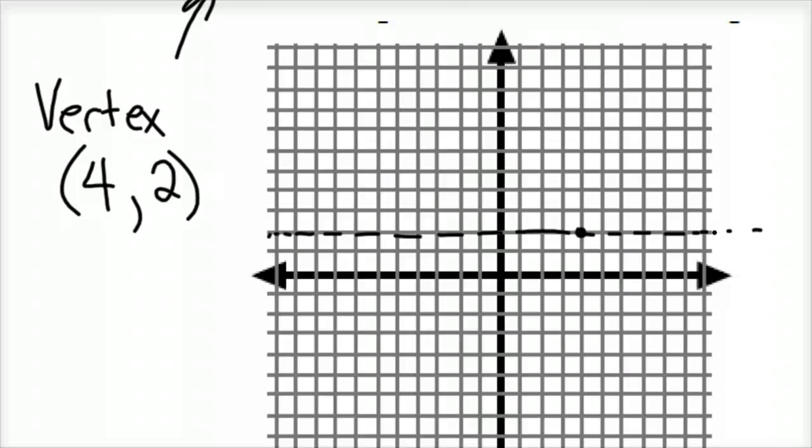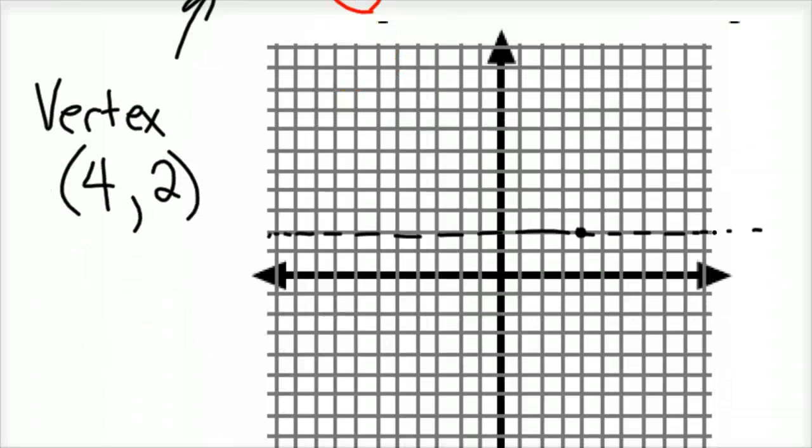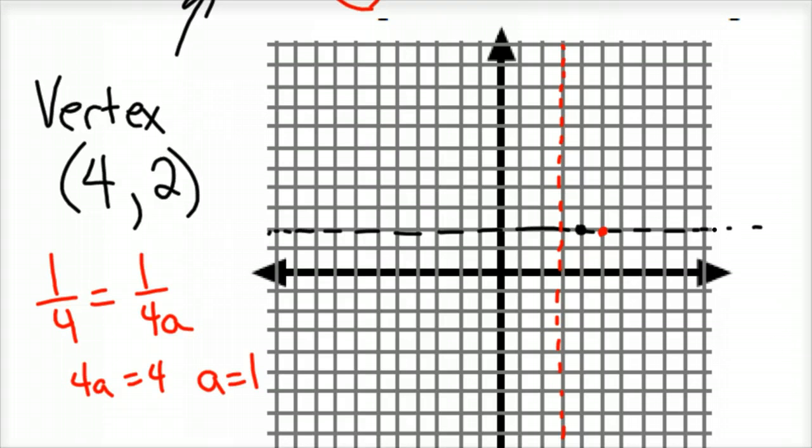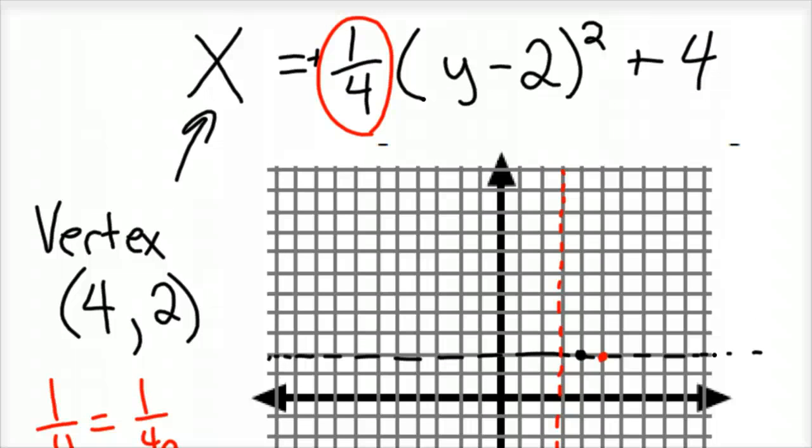So the next thing, we've got our vertex, we've got our axis of symmetry. Let's go ahead and find our focus. Here's the 1/4, there's our a value. So 1/4 equals 1 over 4a. Cross multiply, 4a equals 4, so I know my distance to focus is 1. You add 1, it's going to be right there. Subtract 1, and there's your directrix. I know this particular parabola is going to open to the right.